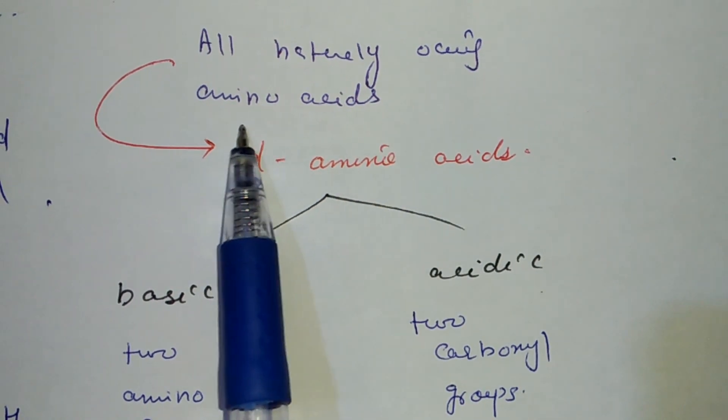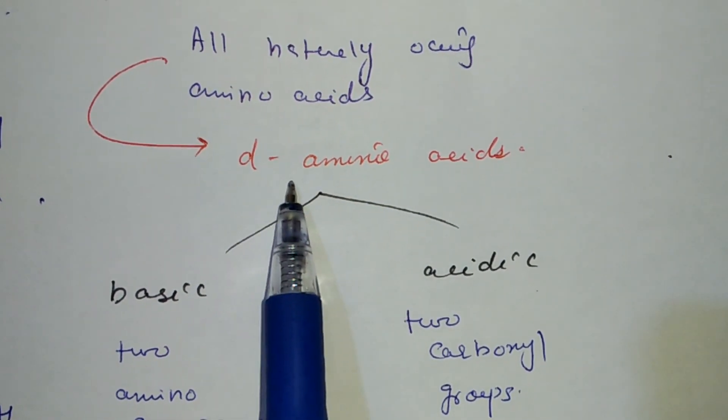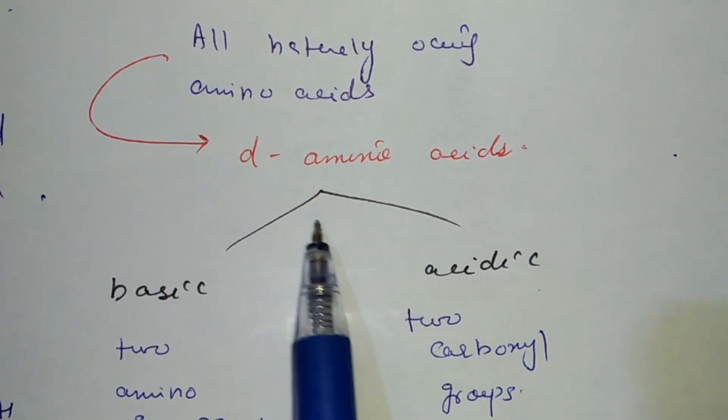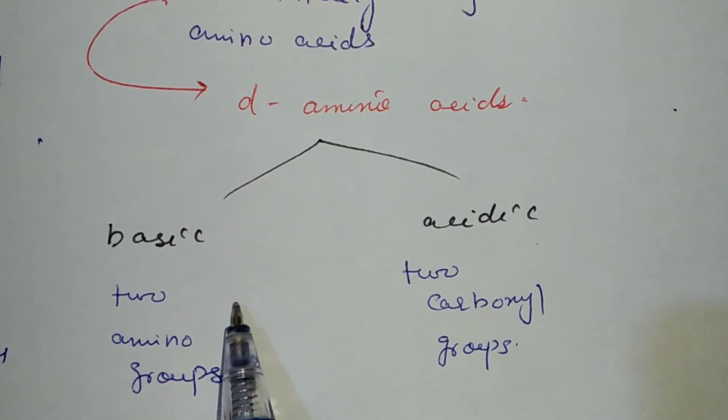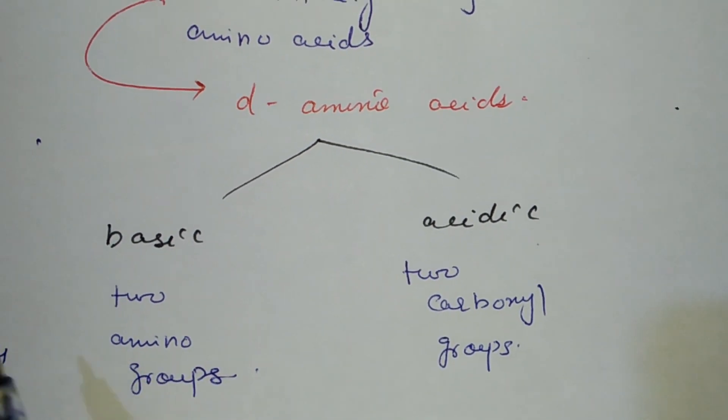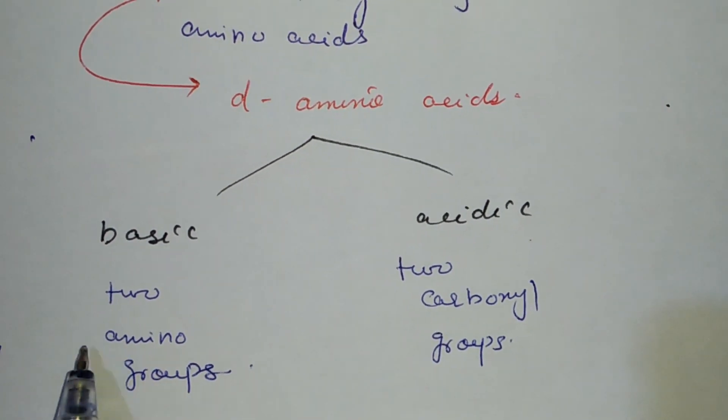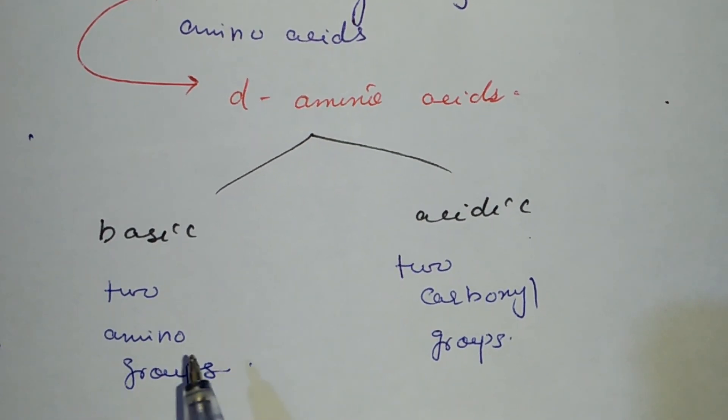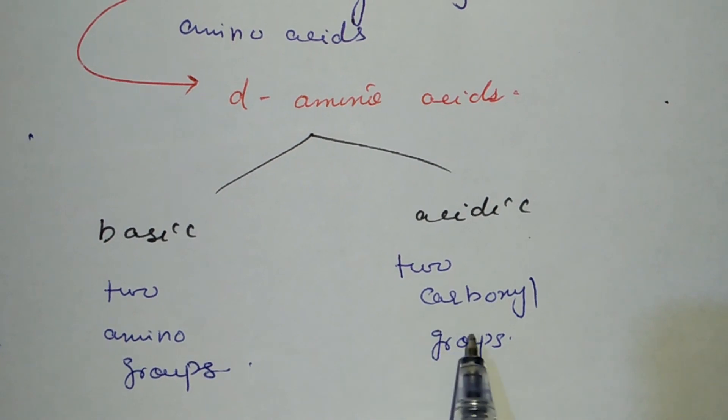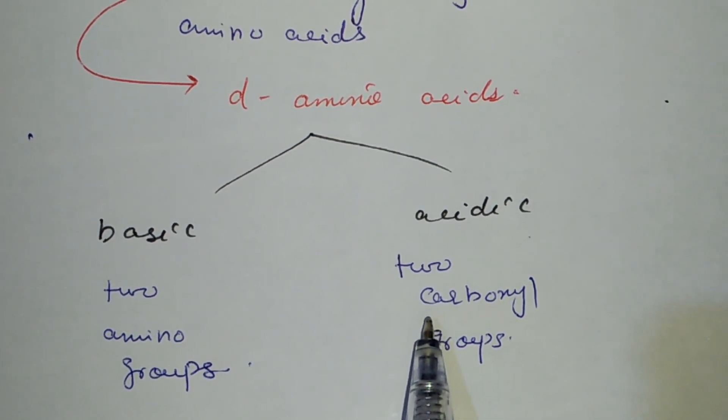Naturally occurring amino acids are alpha amino acids. There are two types: basic and acidic. Amino acids have a carboxyl group and amino groups. Two amino groups make it basic, and two carboxyl groups make it acidic.